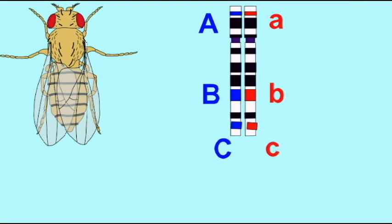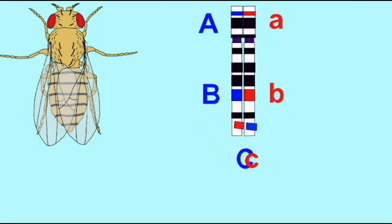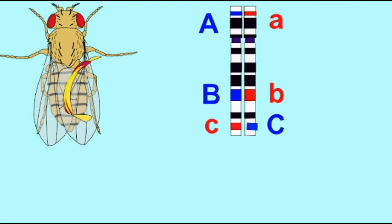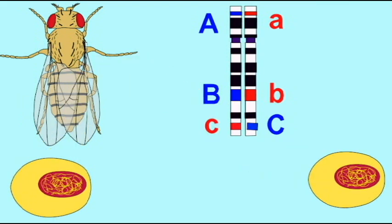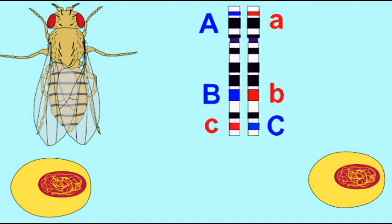the only way that C could be separated from B and A is if the crossover event occurred by chance in the narrow area between the B and C genes.